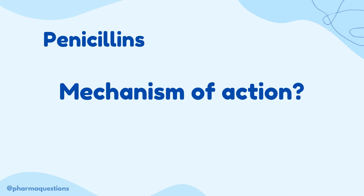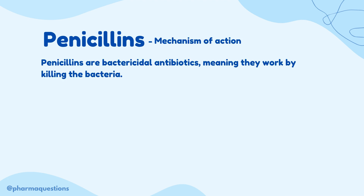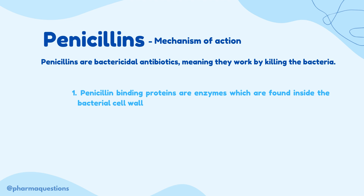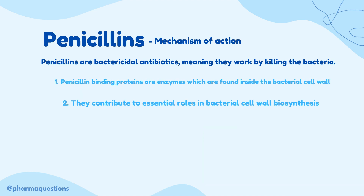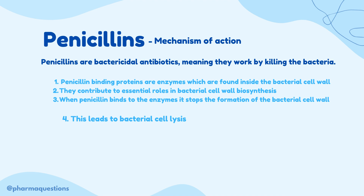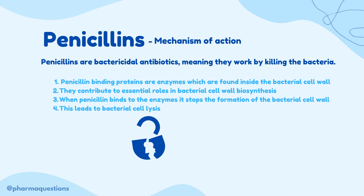So let's begin with the mechanism of action. Penicillins are bactericidal antibiotics, meaning they work by killing the bacteria. It all starts with something called penicillin binding proteins. These are enzymes found inside the bacterial cell wall and they contribute to essential roles in bacterial cell wall biosynthesis. When penicillin binds to these enzymes it stops the formation of the bacterial cell wall, which then leads to bacterial cell lysis — meaning the bacterial cell breaks down.